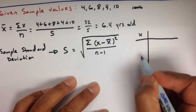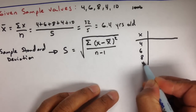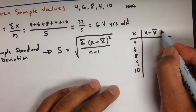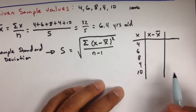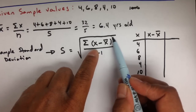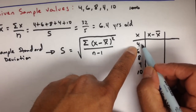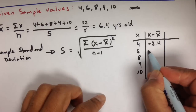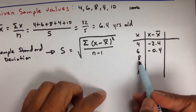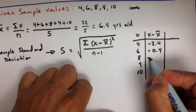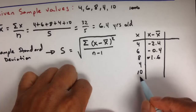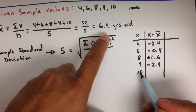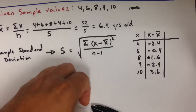In one column, we're going to list all our values: 4, 6, 8, 4, and 10 years old. We're going to have a column for all of the x minus the mean. So: 4 minus 6.4 is negative 2.4; 6 minus 6.4 is negative 0.4; 8 minus 6.4 is positive 1.6; 4 minus 6.4 is negative 2.4; and 10 minus 6.4 is 3.6.